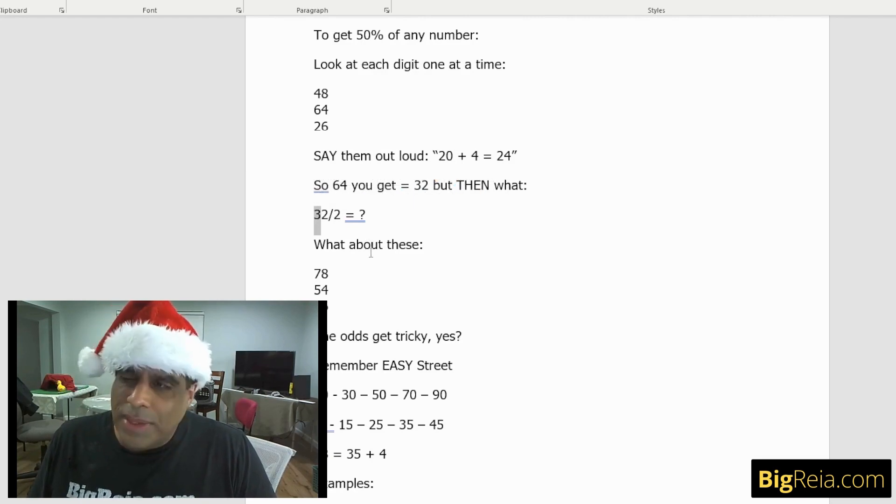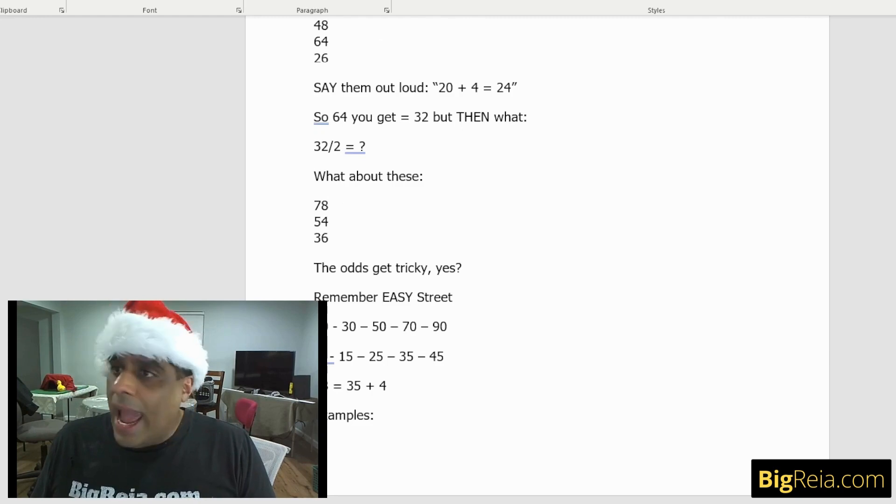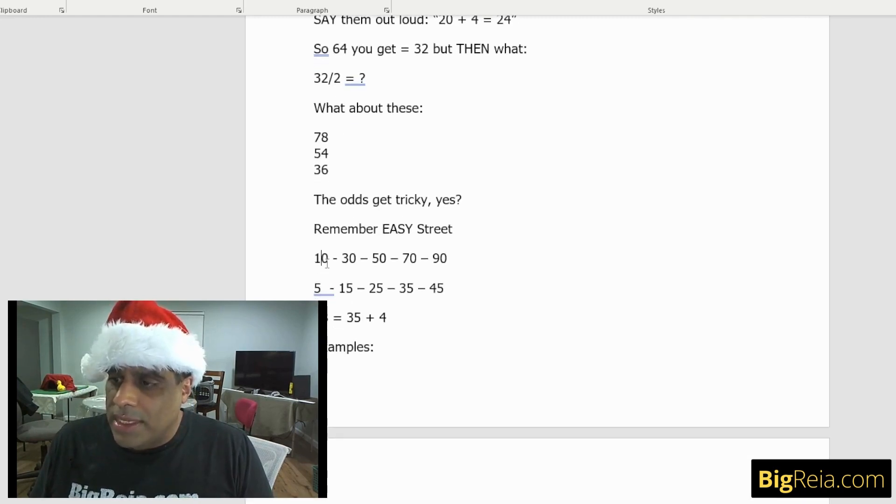It gets a little bit different when we have odd numbers. So that's why we want to look at 78, 54, 36. That's a little bit weirder, a little bit stranger to get half of. The odds get a little tricky. So the way we do this, we want to add to the easy street.